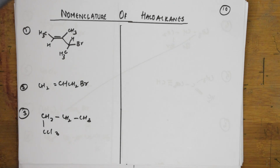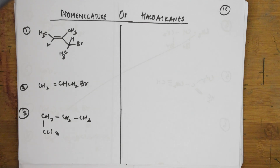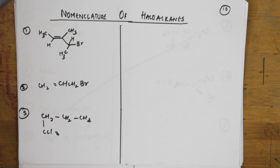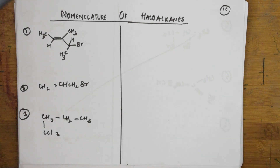In today's video we'll be seeing how to write the IUPAC nomenclature for haloalkenes. After haloalkenes, I'll be covering alcohols, aldehydes, ketones, carboxylic acids, isocyanides, cyanides, and hydrocarbons also. Please watch the previous video, understand the rules, and then start working through these examples.